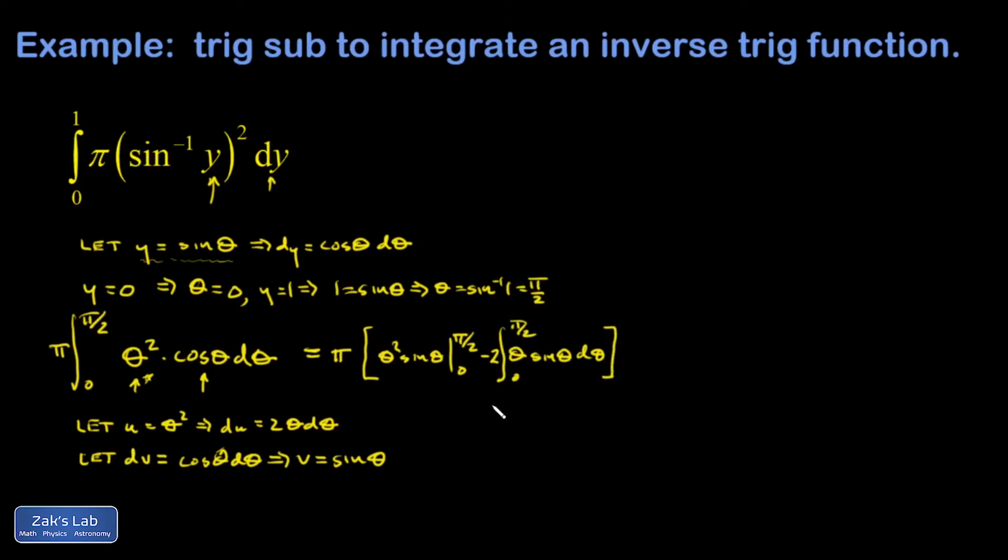This is progress because I've knocked down theta squared to theta. With one more iteration of integration by parts, that'll be knocked down to a constant. I've got pi out in front.